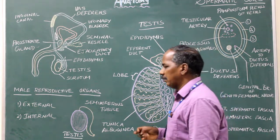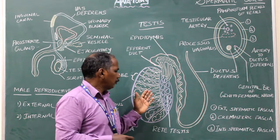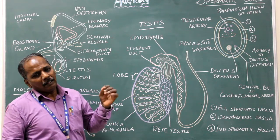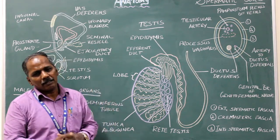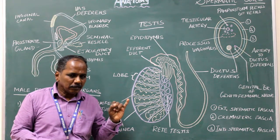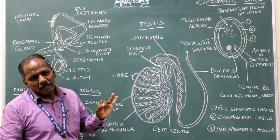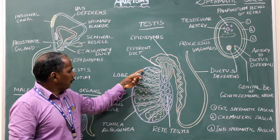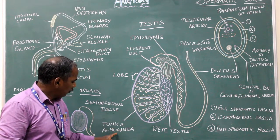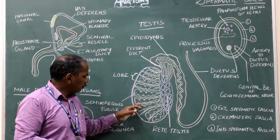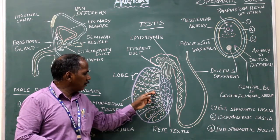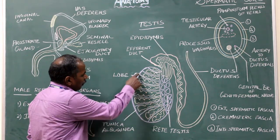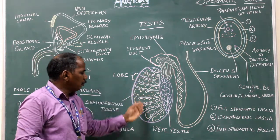Structure of testes. It has an outer covering which is made up of three layers: tunica vaginalis, tunica albuginea, and tunica vasculosa. From the tunica albuginea, numerous septa invade the testes, dividing the testes into 200 to 300 lobules.